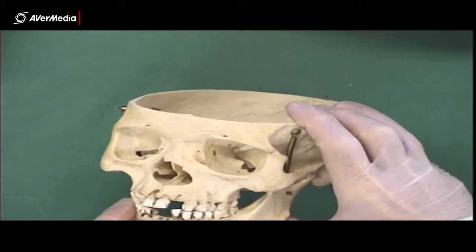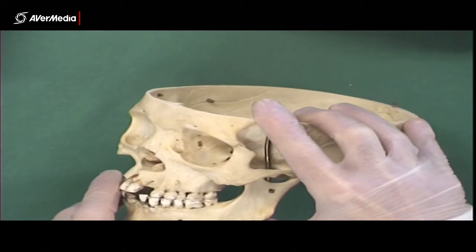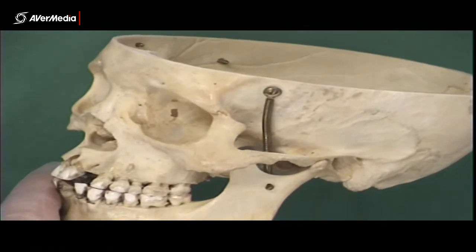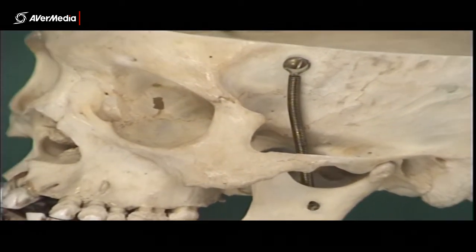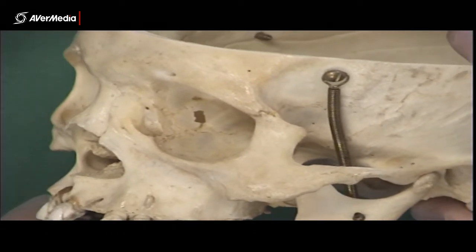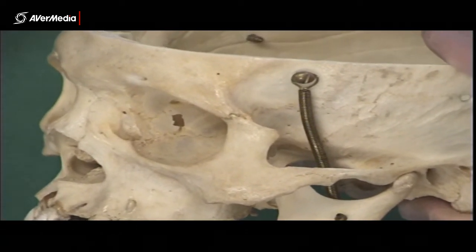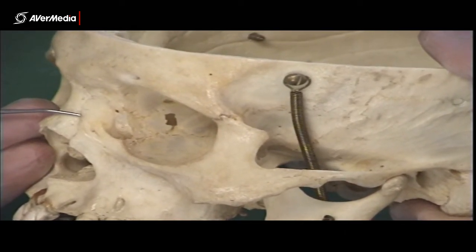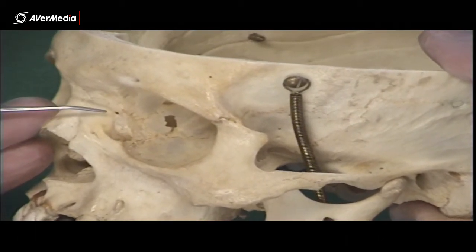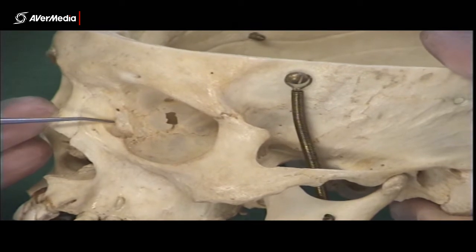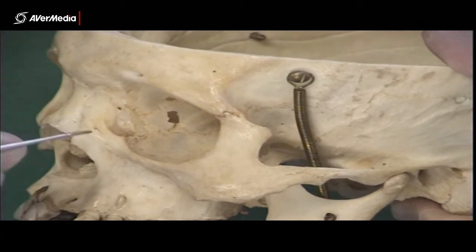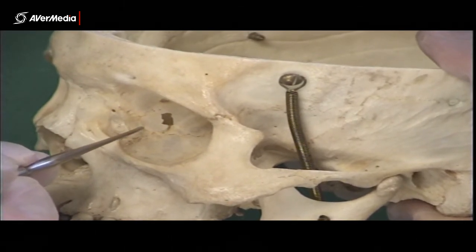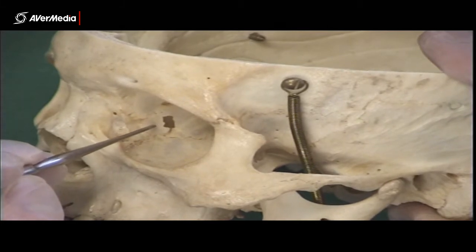Then we have another canal called the nasolacrimal canal, and at this point it's worth zooming in for a really close look so we can see all the bones in the region. If you look closely you can see the sutures — the joints between the bones. Here we have a nasal bone with a suture, then this is the maxilla, then the lacrimal bone with another suture join, and behind that we have the ethmoid bone.